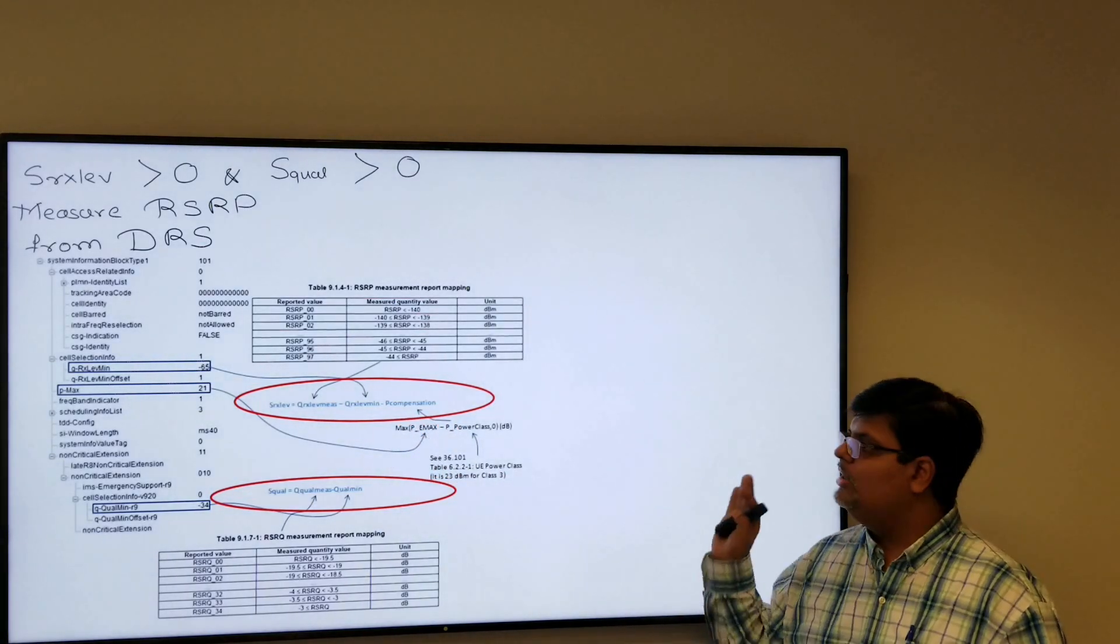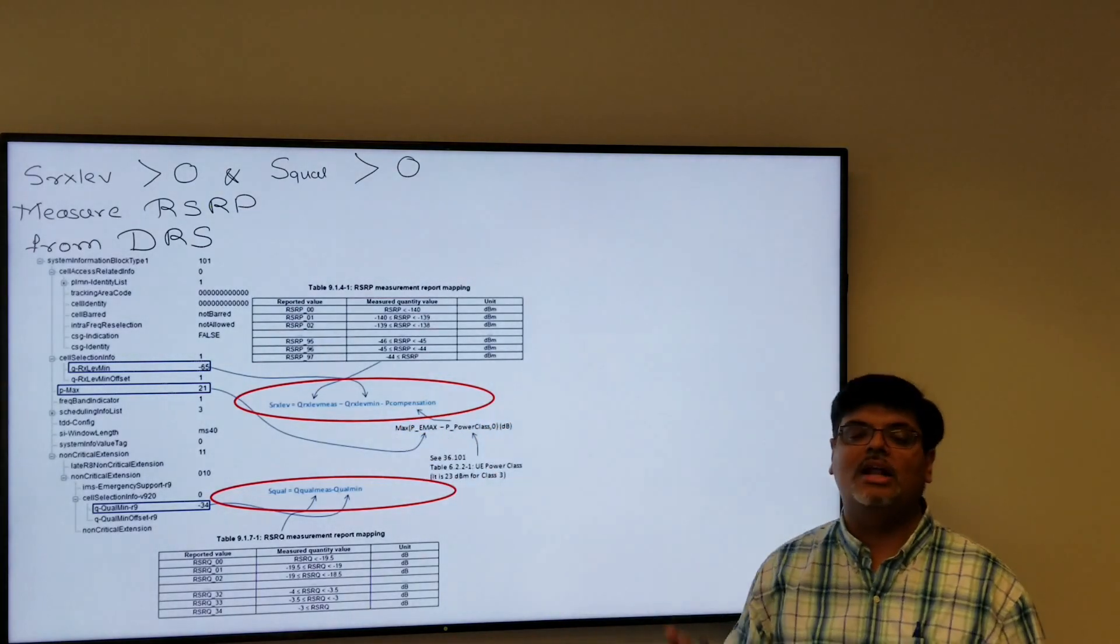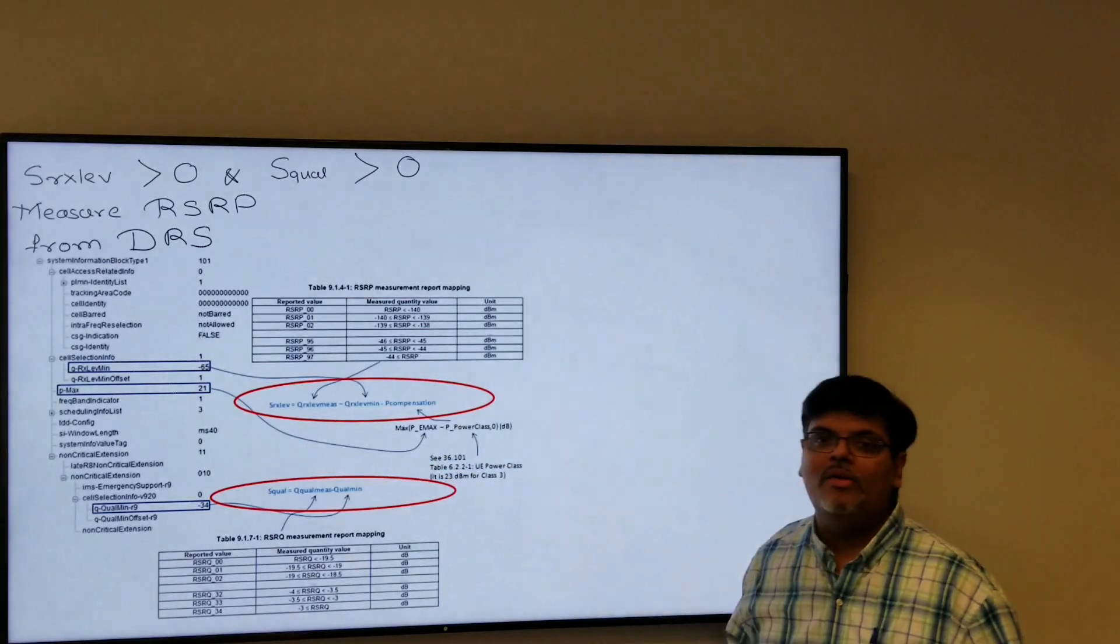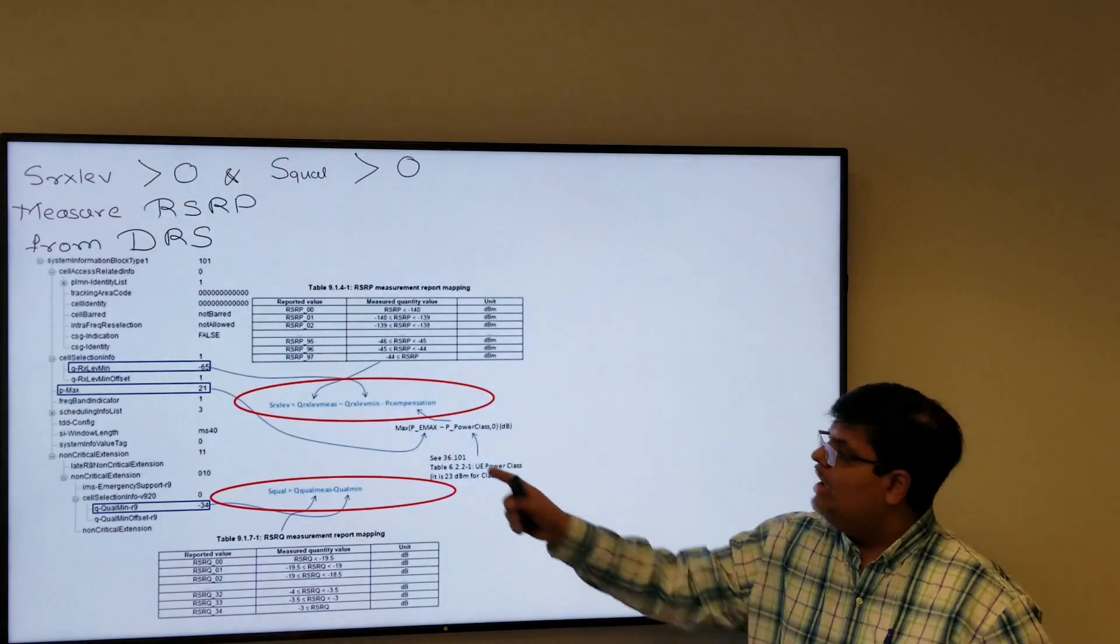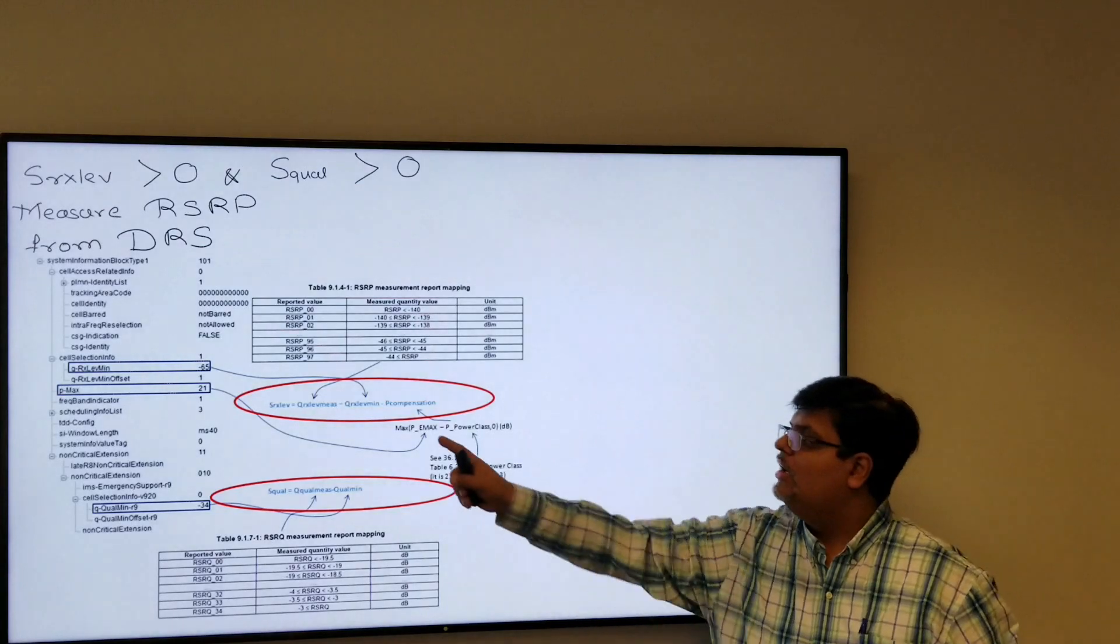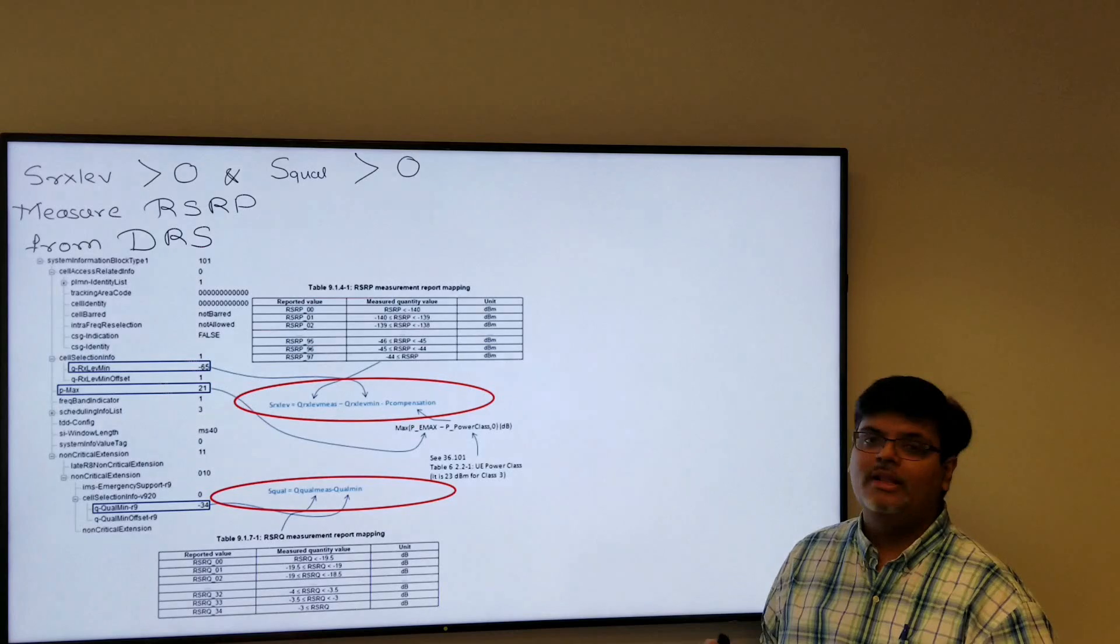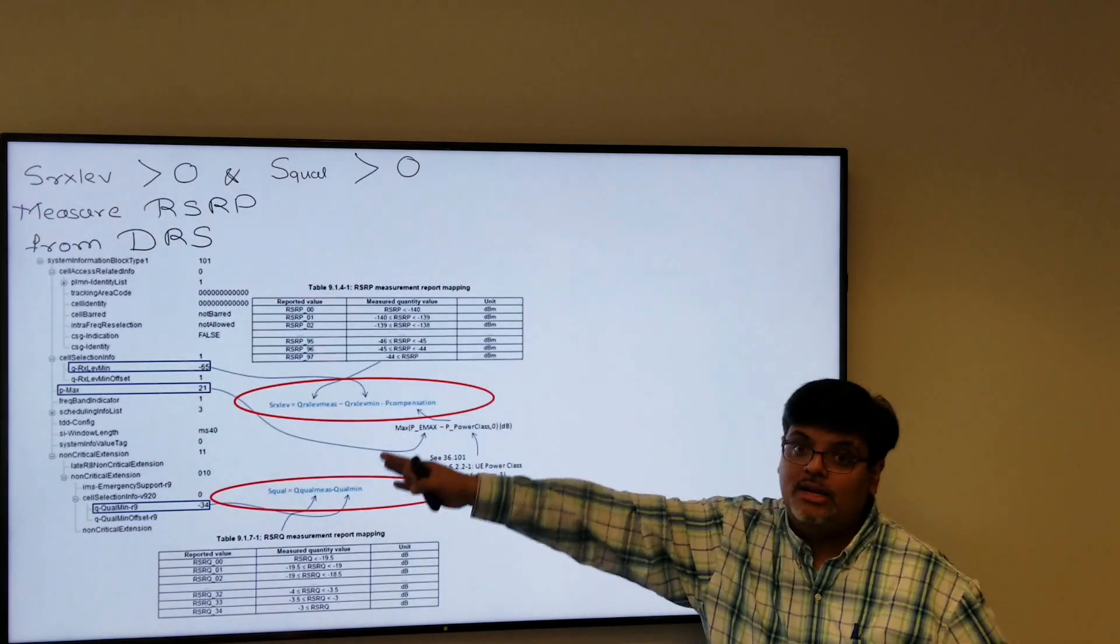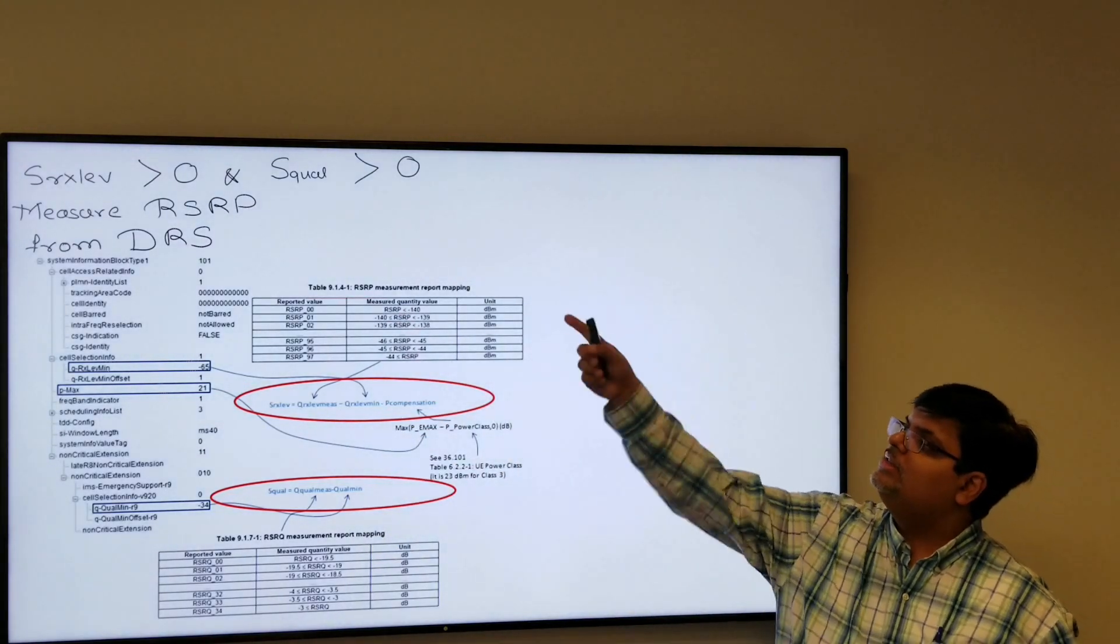I would say not to get bothered or worried about the formula. All these parameters are transmitted in SIB1 except one parameter which is Q receive level measure which is nothing but the UE measures. That is the first one subtracted by all the other parameters. So you put there the received reference signal received power of the cell reference signal, and then you put all the other parameters which are written in the SIB1. Everything is transmitted in SIB1. You just make sure that the cell Rx level is greater than zero and S qual is greater than zero.